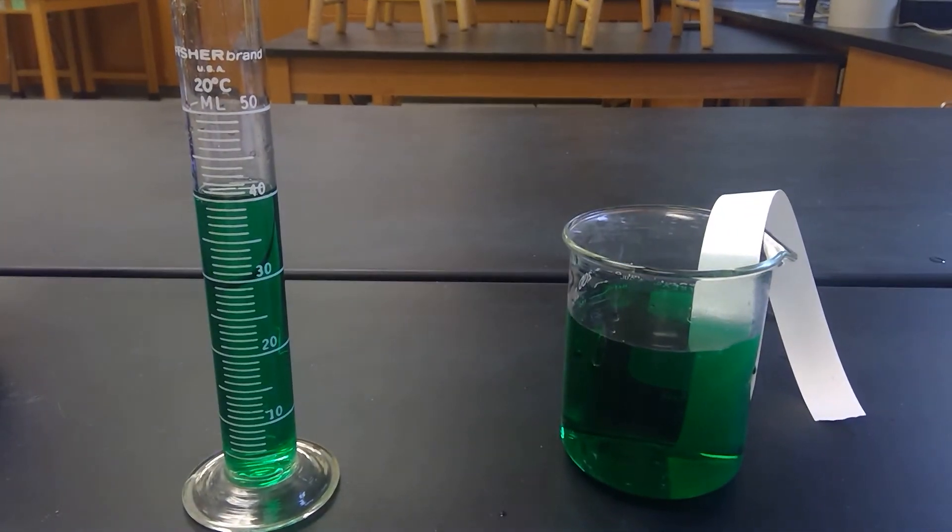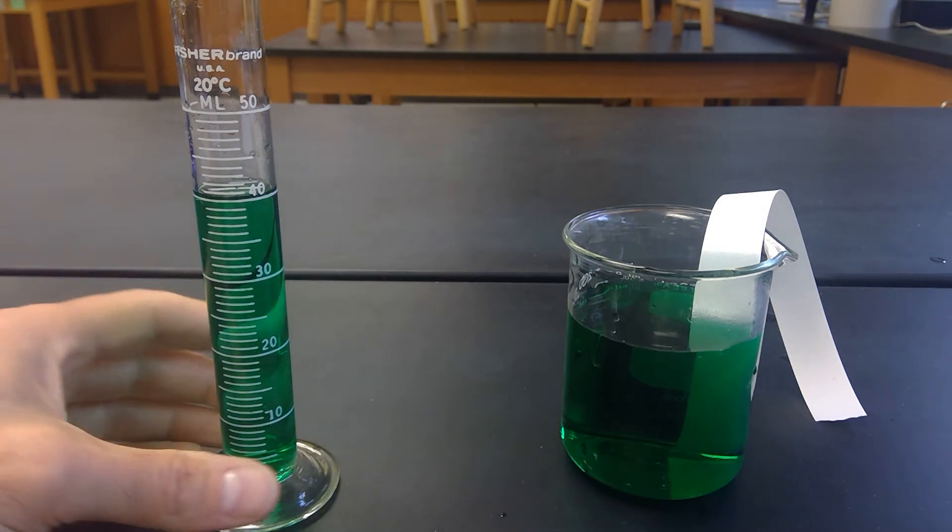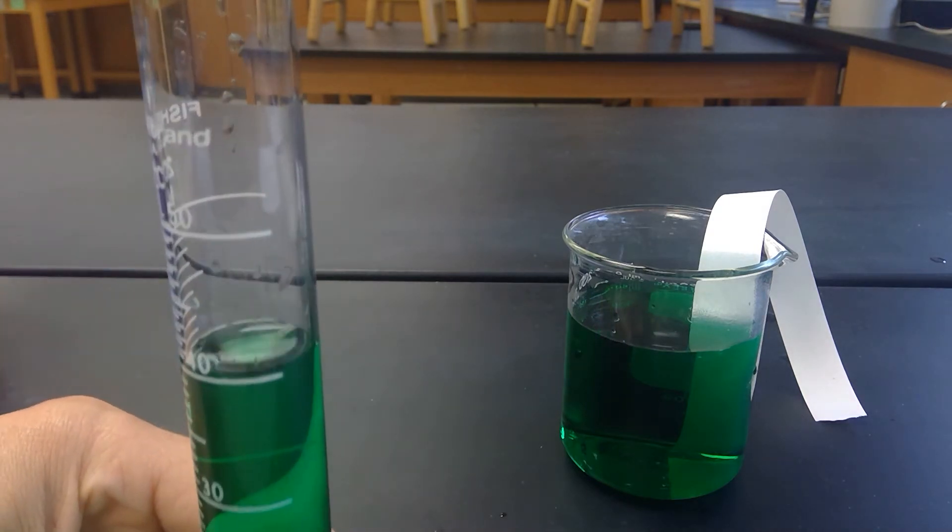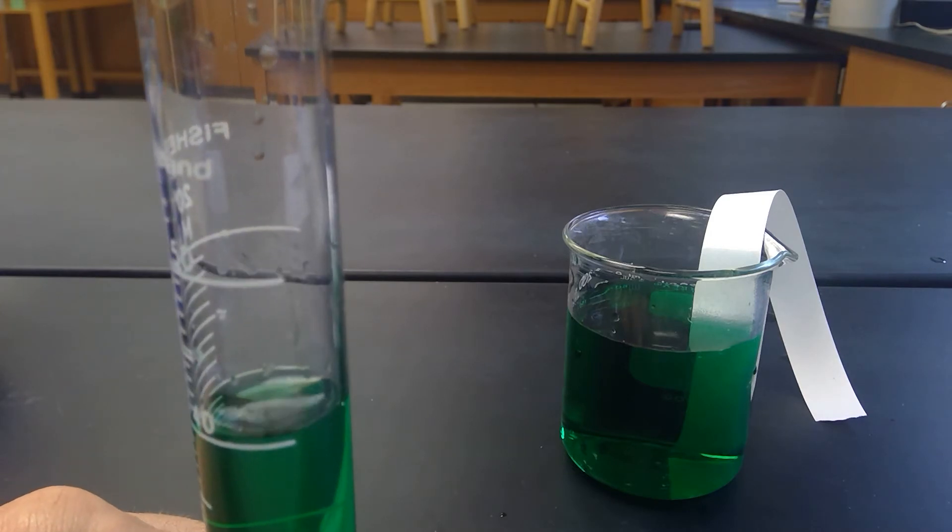Okay. So that's part A. For part B, we want to look at this graduated cylinder. And if you look at it very closely, you'll see that the surface of the water actually goes up a little bit along the edges. That's referred to as a meniscus and I'm actually going to make my camera go down.